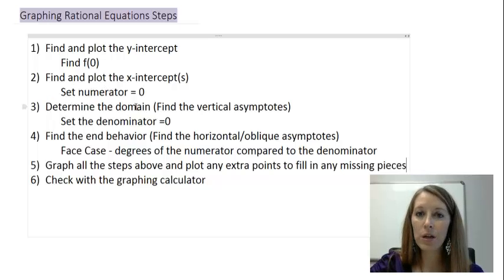Finding the domain, really we're focusing on finding the vertical asymptotes, and we do that by figuring out where our function is not defined. Since it's a rational or a fraction, we do that by setting the denominator equal to 0. And finding the end behavior, meaning the horizontal or oblique asymptotes, we do this by using the face case, looking at the degrees of the numerator compared to the degrees of the denominator.